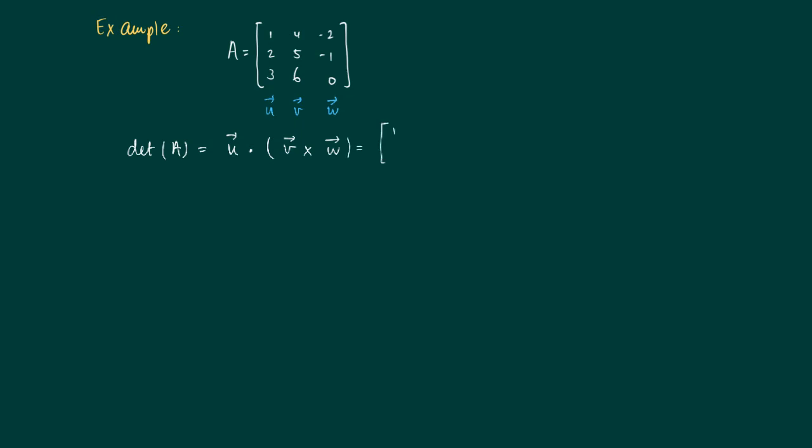So this is the inner product of [1, 2, 3] with the cross product of [4, 5, 6] with [-2, -1, 0]. We first will calculate the cross product in the following fashion. Now we make these blue crosses.